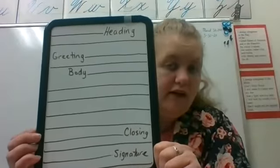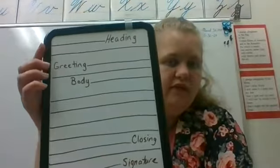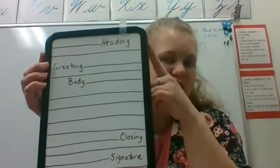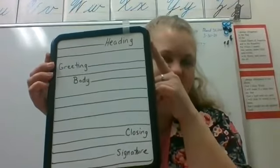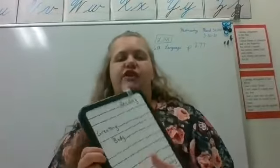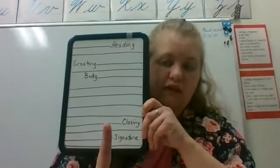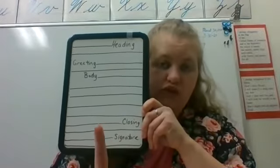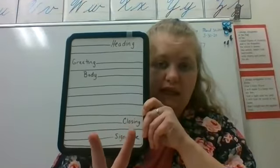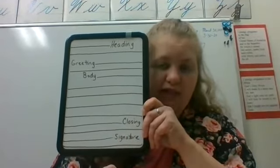I made a sample letter on my little whiteboard to show you how to do this. Your heading goes up in the right-hand corner of the letter. The heading includes your address — your street address with your house number and street name, then your city, state, and zip code on the second line.